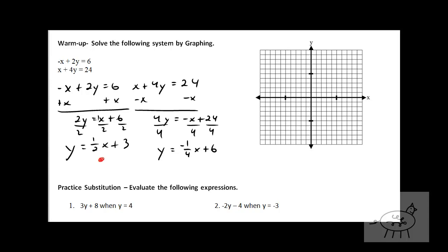So let's graph this one. I'm going to graph this first one in red. I'm going to go up three — that's my y-intercept. The slope is one half, so it's up one over two. I'm going to do several of those points, and I'll go the other way too. Don't worry about going to the left — you'll know if you mess up because you'll have a point in a random location; it's got to follow a straight line. Now let's do this one in blue. I go up to six, and the slope is negative one fourth. So down one over one, two, three, four. Oh, look at that — we got our point already.